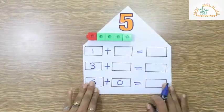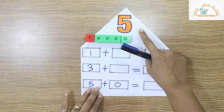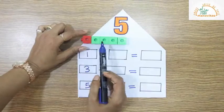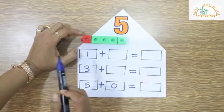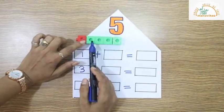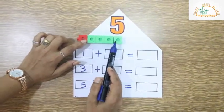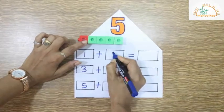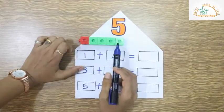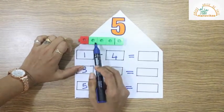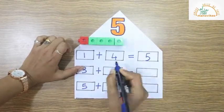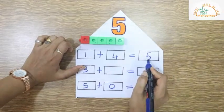Now let's go to the next example — adding fact for 5. Here there are 5 cubes. Let's count how many cubes: 1, 2, 3, 4. And let's count all together: 1, 2, 3, 4, 5. So the answer is 5. So 1 plus 4 is 5.